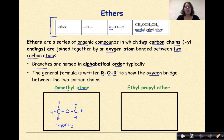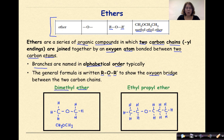Let's look at another example: ethylpropyl ether. We have an ethyl branch — two carbons — linked by an oxygen to a propyl group — three carbons. Then we put bonds and hydrogens around all the carbons. The condensed structural formula is CH₃CH₂OCH₂CH₂CH₂CH₃, and that represents ethylpropyl ether.